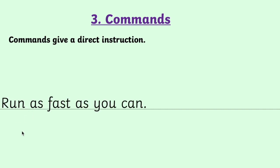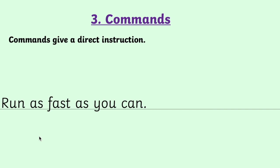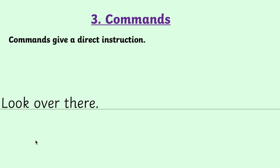You can sometimes think of commands as bossy sentences because they just give an instruction. Here are two more examples: 'Run as fast as you can' — this sentence begins with the verb 'run', and no one in particular is doing it. 'Look over there' — again, the verb 'look' is how the sentence starts. Commands are found very often in a list of instructions. In our travel guide, when we have that list of instructions in the middle — one, two, three — each of those instructions starts with a verb, so each one is a command.